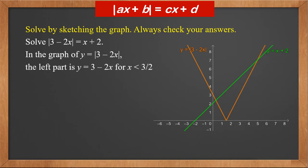The left part is three minus two x for x less than three over two. Therefore, we need to solve three minus two x equals x plus two. The solution is x equals one third. It is less than three over two, so it's valid.